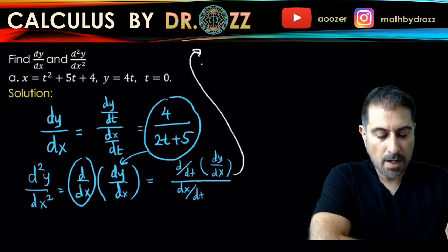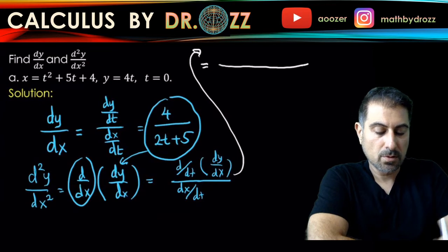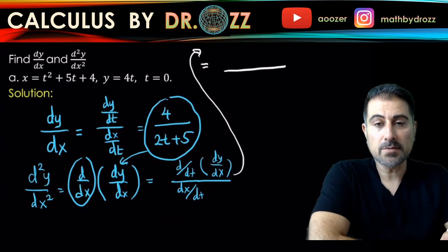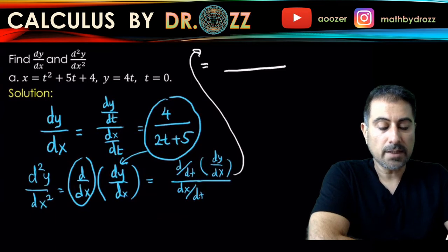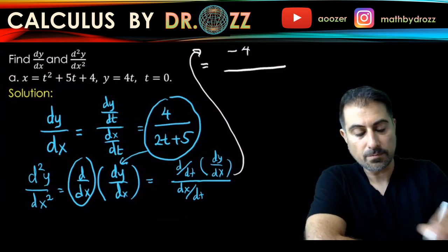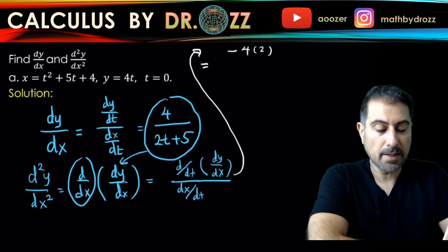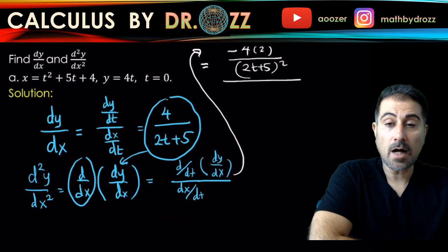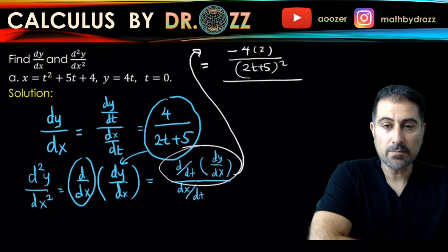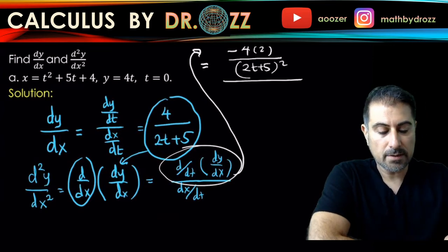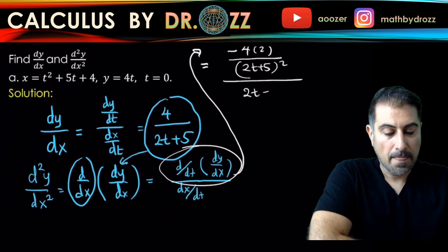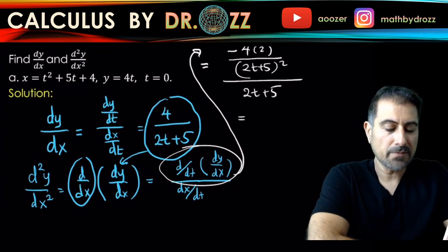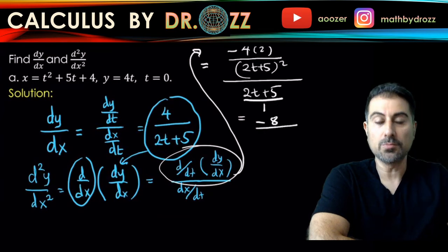So let me just continue right from here. So I have d dt dy over dx. So let's use the quotient rule. The derivative of 4 is 0, 0 times the bottom is 0, minus 4 times the derivative of the bottom, which is 2. All divided by the bottom squared. This takes care of the top of d squared y dx squared. For the bottom we have, we need dx over dt, which is 2t plus 5. So if you do the division here, you can put 1 here, and then flip this over. So this becomes negative 8 divided by 2t plus 5 cubed.